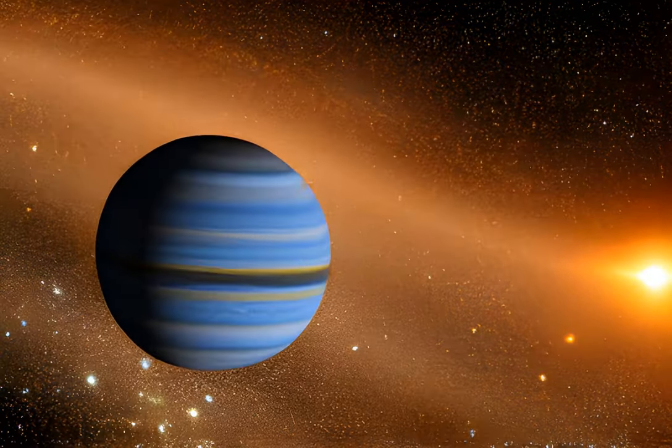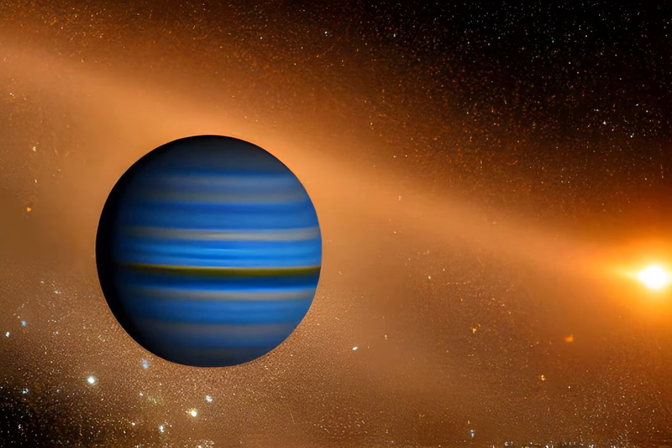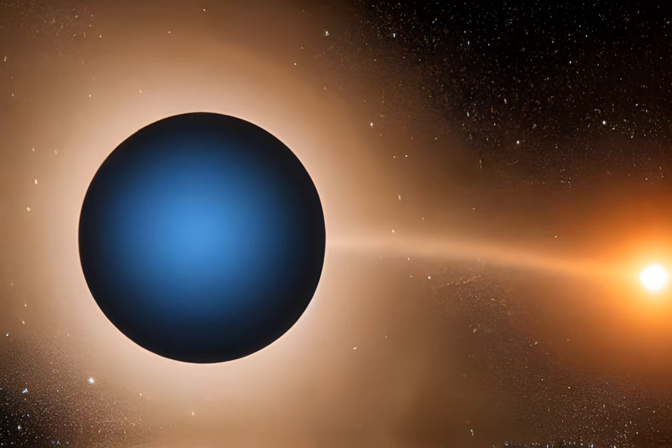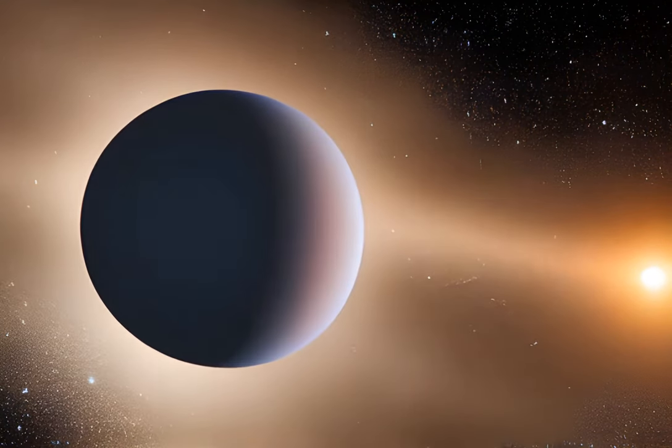The researchers have published their findings on a preprint survey, suggesting that HIP 104,045 is a good place to start looking for Earth-like planets.